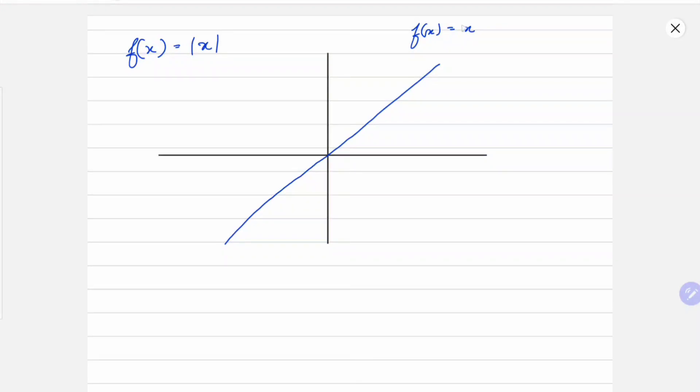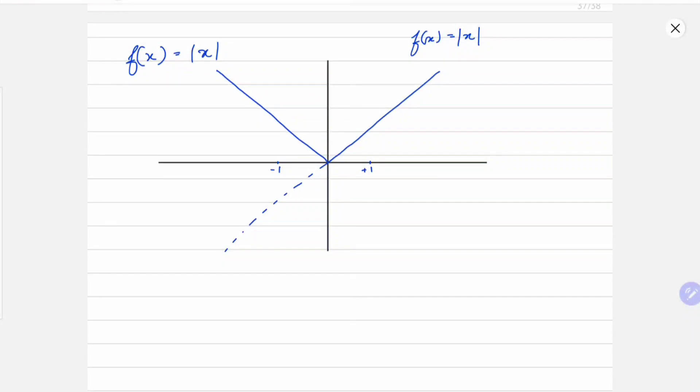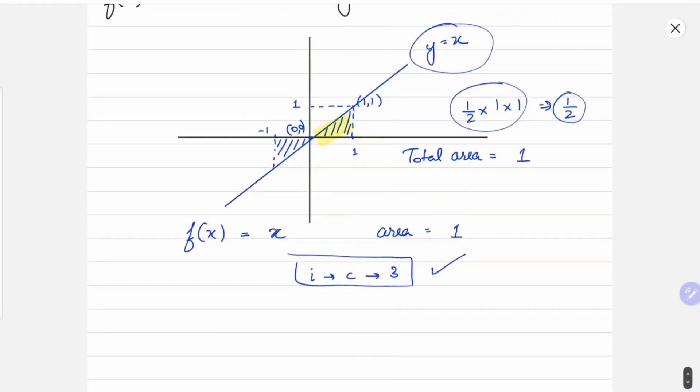Now what addition has been done is we have taken mod of x. So what will happen is the part which is in the negative side of x will change to its mirror image along the x-axis. This one was before and our actual graph is the solid one, not the dotted one. Now we have to find the area between minus 1 and plus 1.